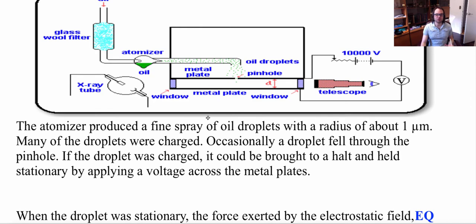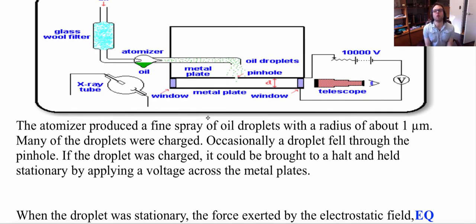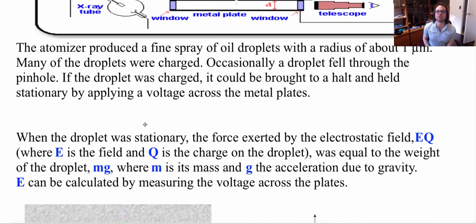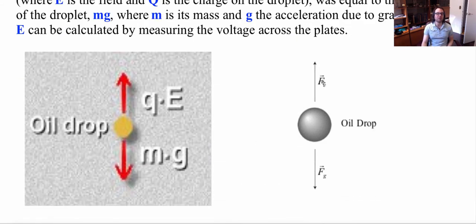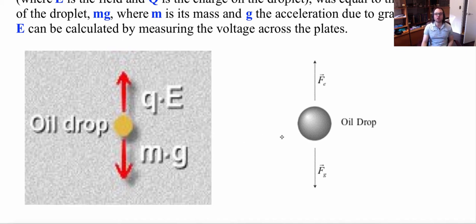Many of the droplets were charged. Occasionally, a droplet fell through the pinhole. If the droplet was charged, it could be brought to a halt — held stationary by applying voltage. When the droplet was stationary, the force exerted by the electrostatic field (electric field multiplied by the charge of the electron) was equal to the weight of the droplet (mass times gravitational acceleration). So we say the gravitational force must equal the electric force, and from there we can rearrange to find the charge of an electron.